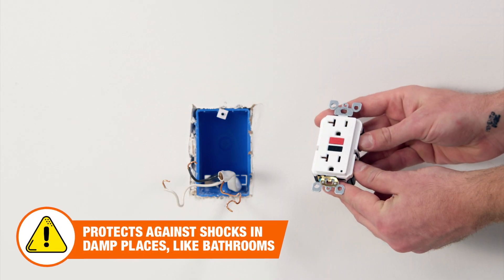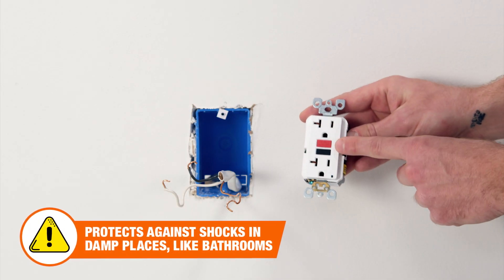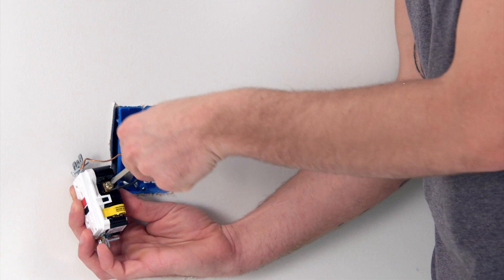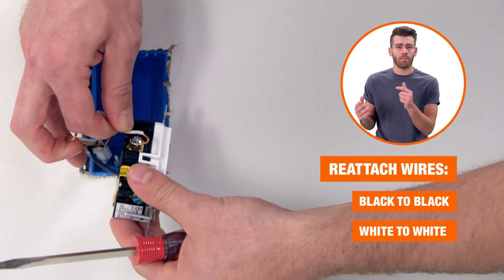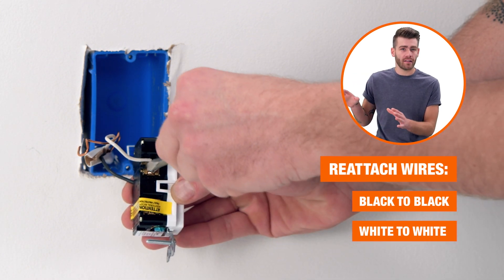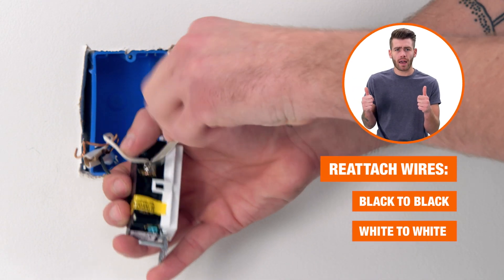And this is a GFCI outlet. It's got a built-in breaker for extra safety. These outlets are really cool because they have a breaker built-in. So if there's a short, it automatically cuts off the power, which is pretty nice.